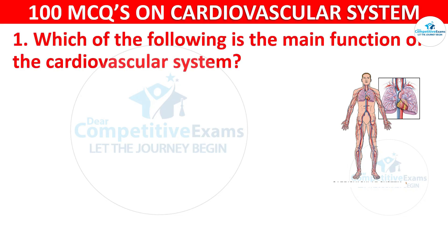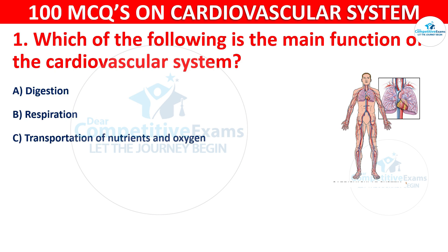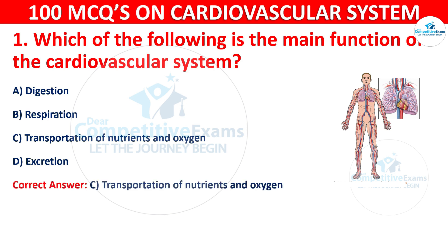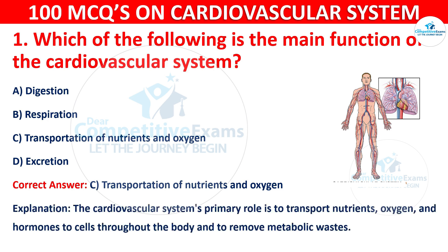Q1. Which of the following is the main function of the cardiovascular system? Options are: digestion, respiration, transportation of nutrients and oxygen, or excretion. The correct answer is C — transportation of nutrients and oxygen. The cardiovascular system's primary role is to transport nutrients, oxygen, and hormones to cells throughout the body and to remove metabolic waste.